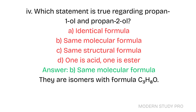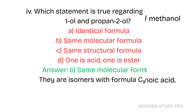Question 4: Which statement is true regarding propan-1-ol and propan-2-ol? A. Identical formula. B. Same molecular formula. C. Same structural formula. D. One is acid, one is ester. Answer: B. Same molecular formula. They are isomers with the formula C3H8O.